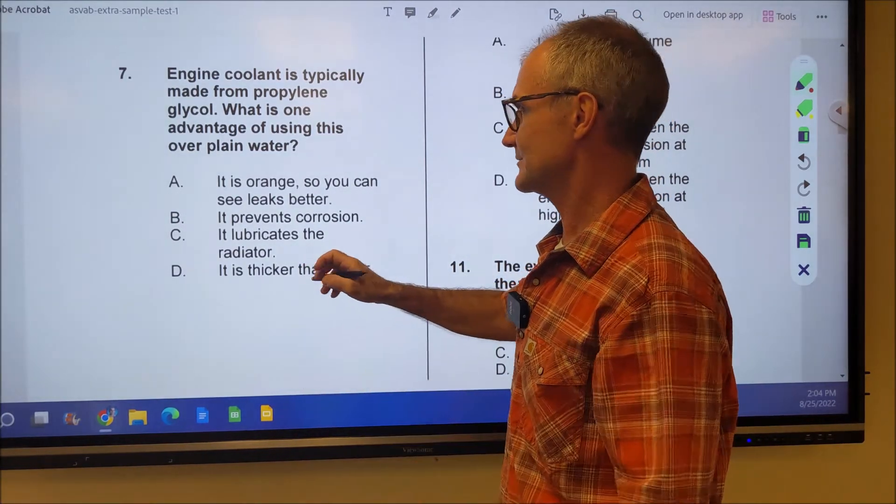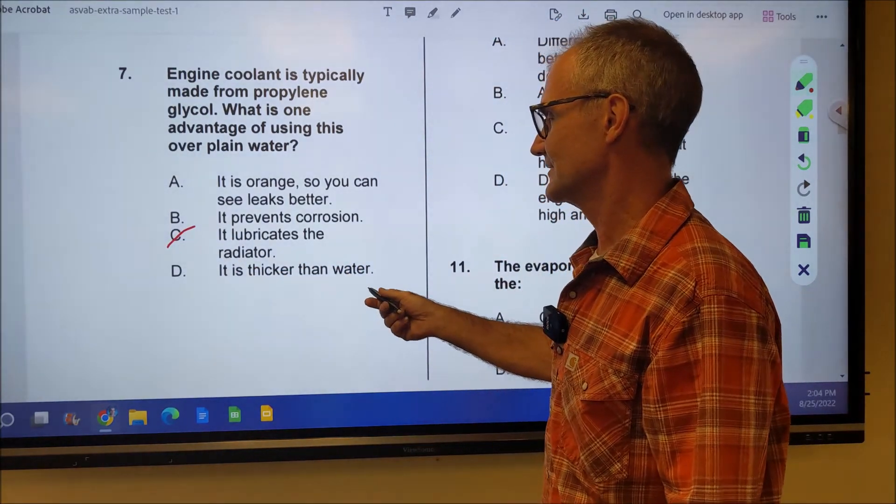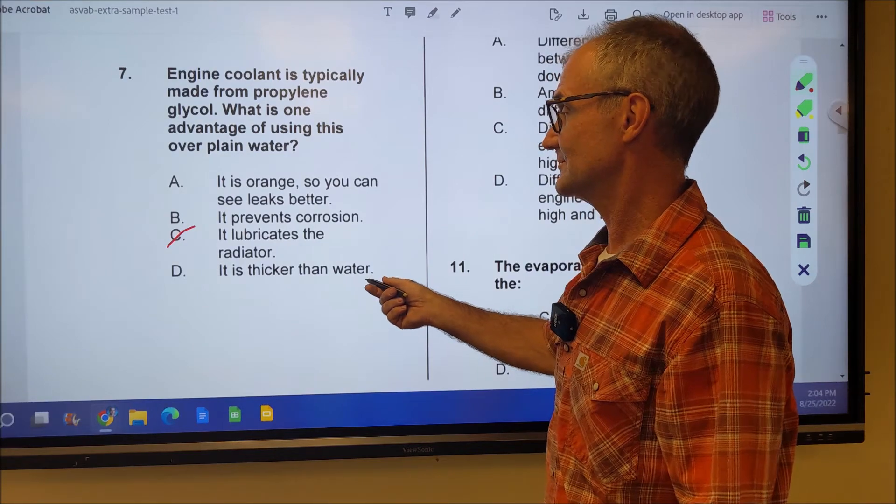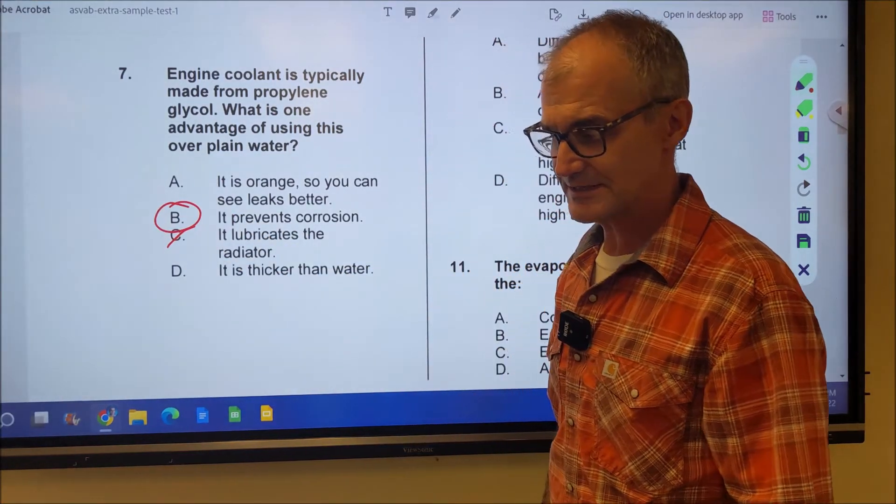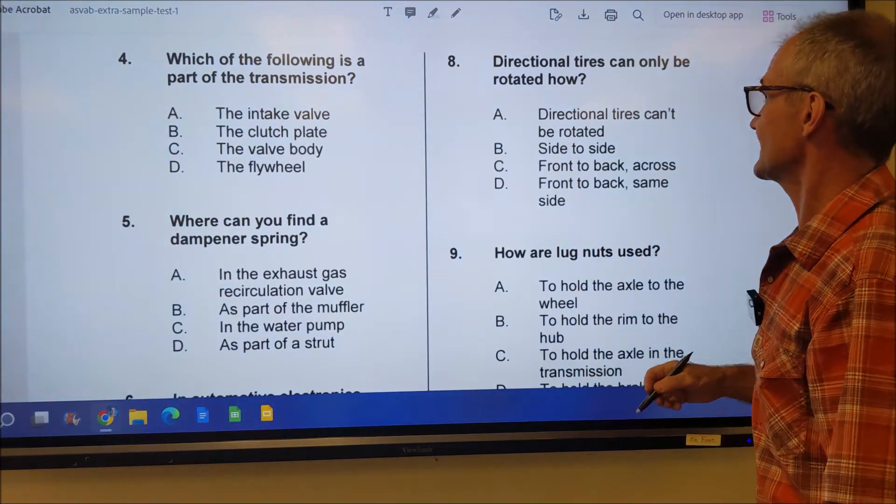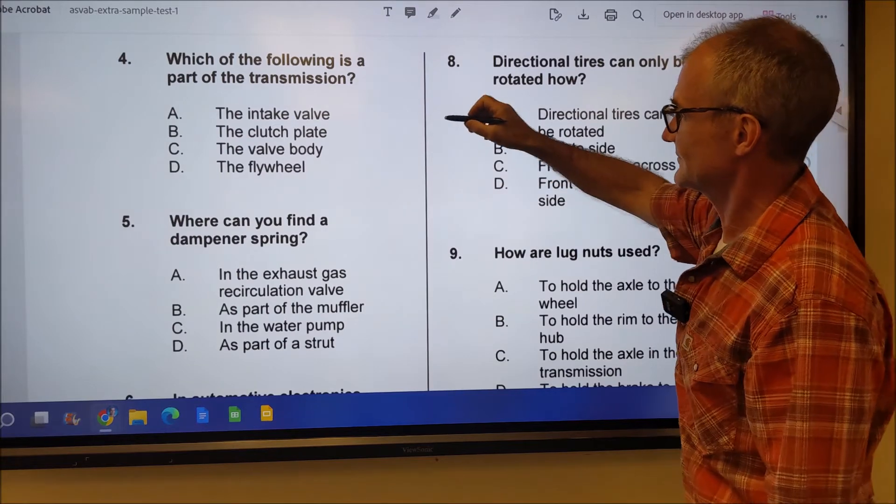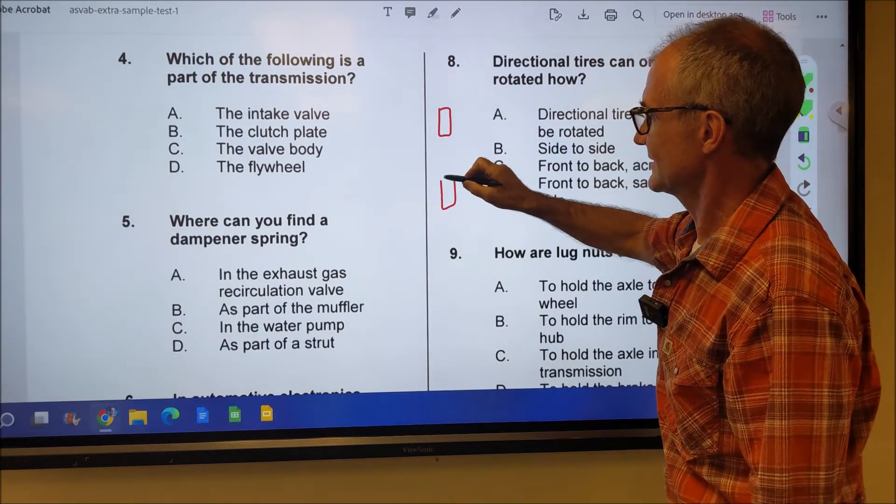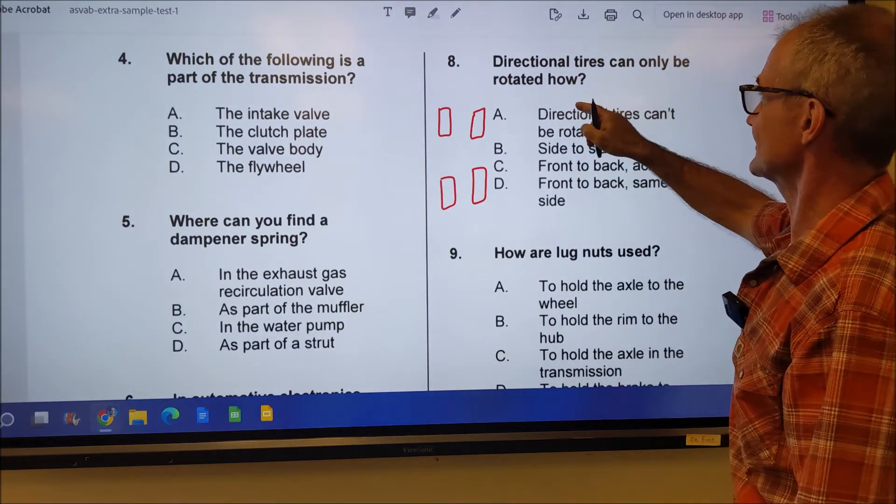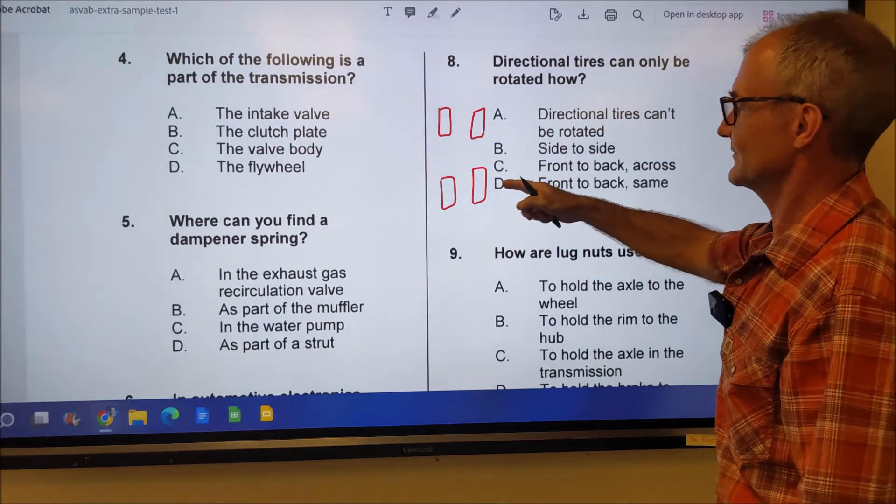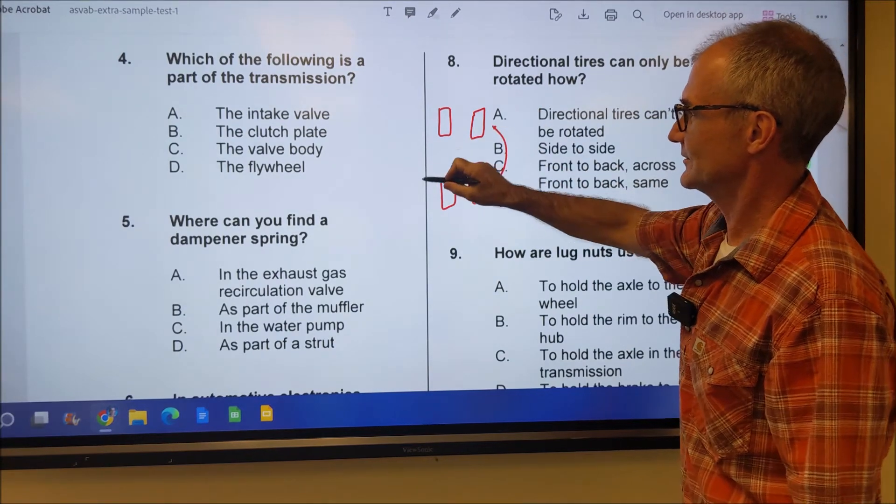It is thicker than water. That's probably true too. But the reason it's there is it prevents corrosion. Answer B. Number eight, directional tires. If I have tires like this on the car and they're only designed to go one way, my directional tires can only be rotated how? Well, if I flip them over, they're going the opposite way. So they could only be moved this way.